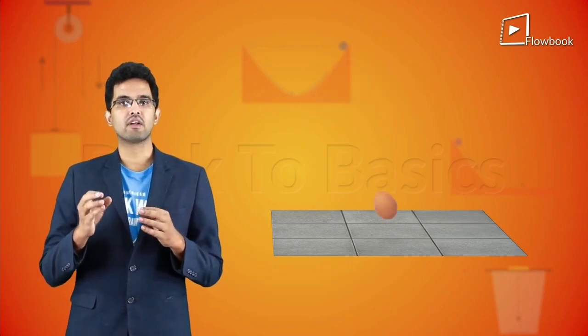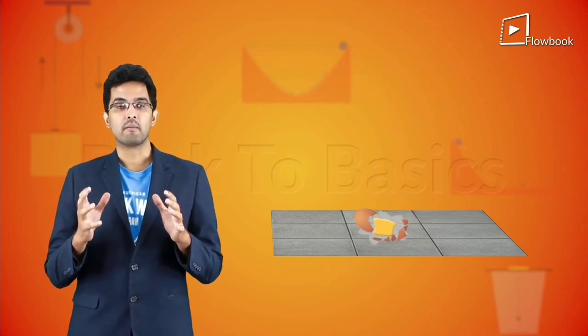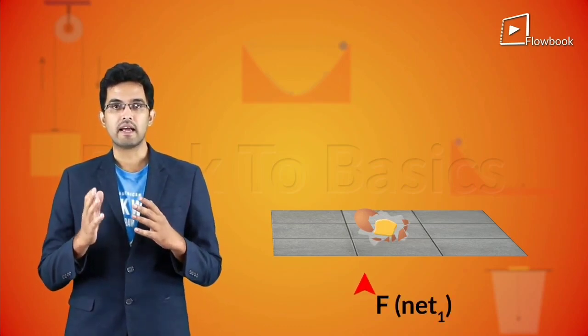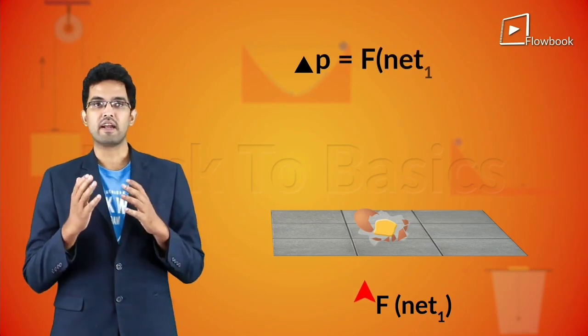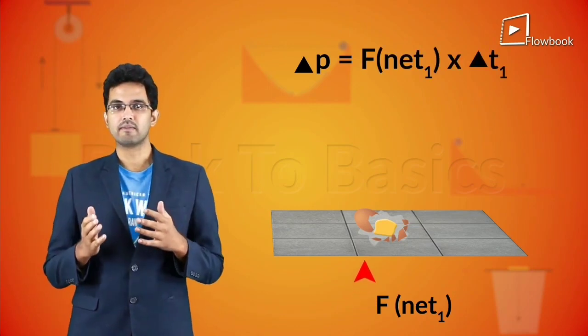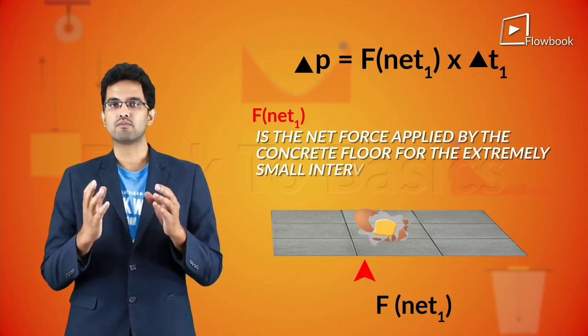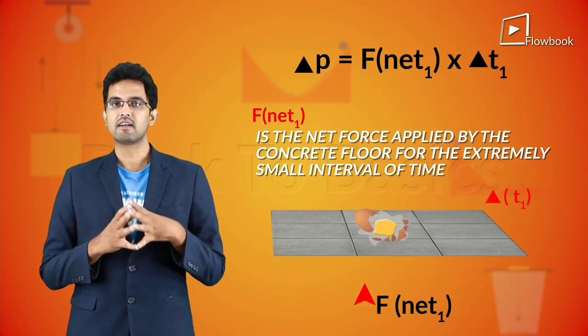When you drop the egg on the concrete floor, it will break because a large force acts on the egg for a very short interval of time. Here, del p is equal to f net 1 into del t1, where f net 1 is the net force applied by the concrete floor for the extremely small interval of time del t1.